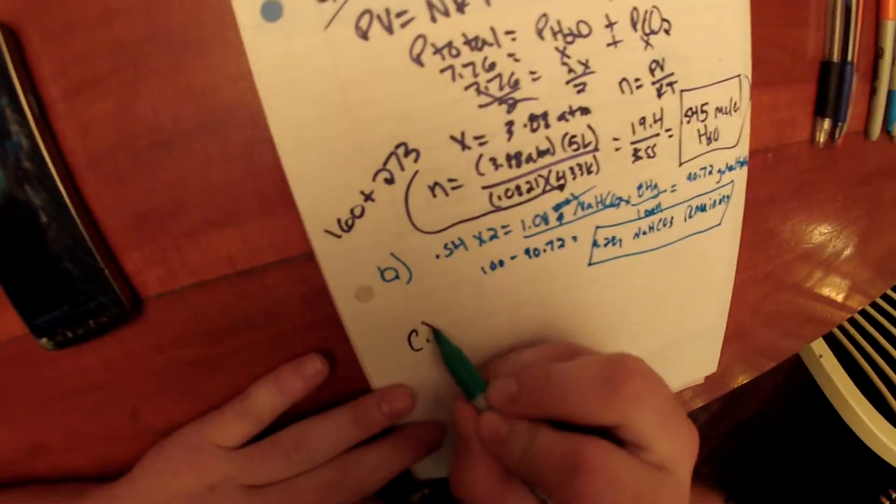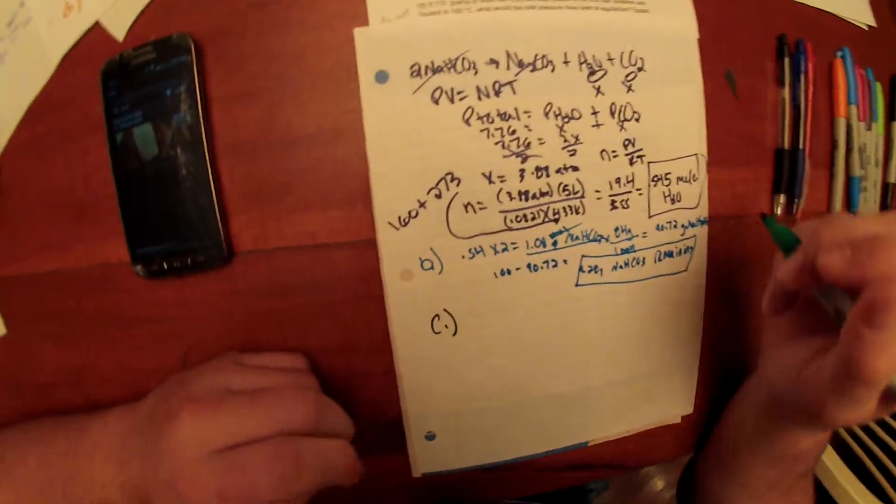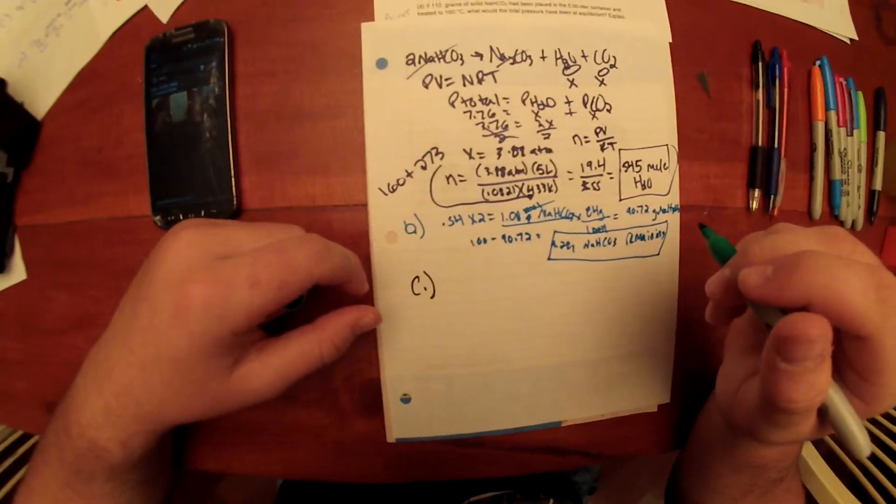Now for question C. Write the equilibrium expression for the equilibrium constant, Kp, and calculate its value for the reaction under the conditions in A.